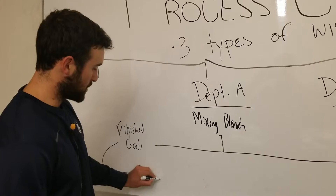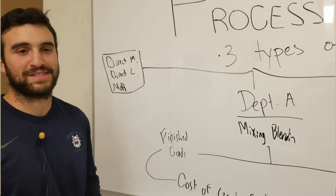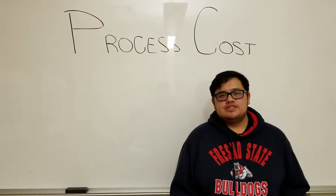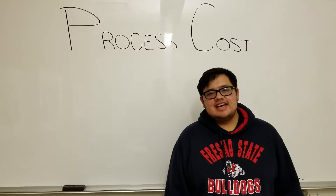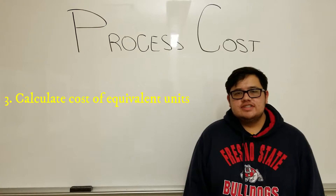And that's how products are involved with process costing. Hi, my name is Jonah. The five steps to prepare the production cost report for the weighted average method are: step one, reconciling the number of physical units; step two, converting the physical units into equivalent units; step three, calculating the cost per equivalent unit; step four, calculating the total cost of work in process inventory; and step five, preparing the production cost report.